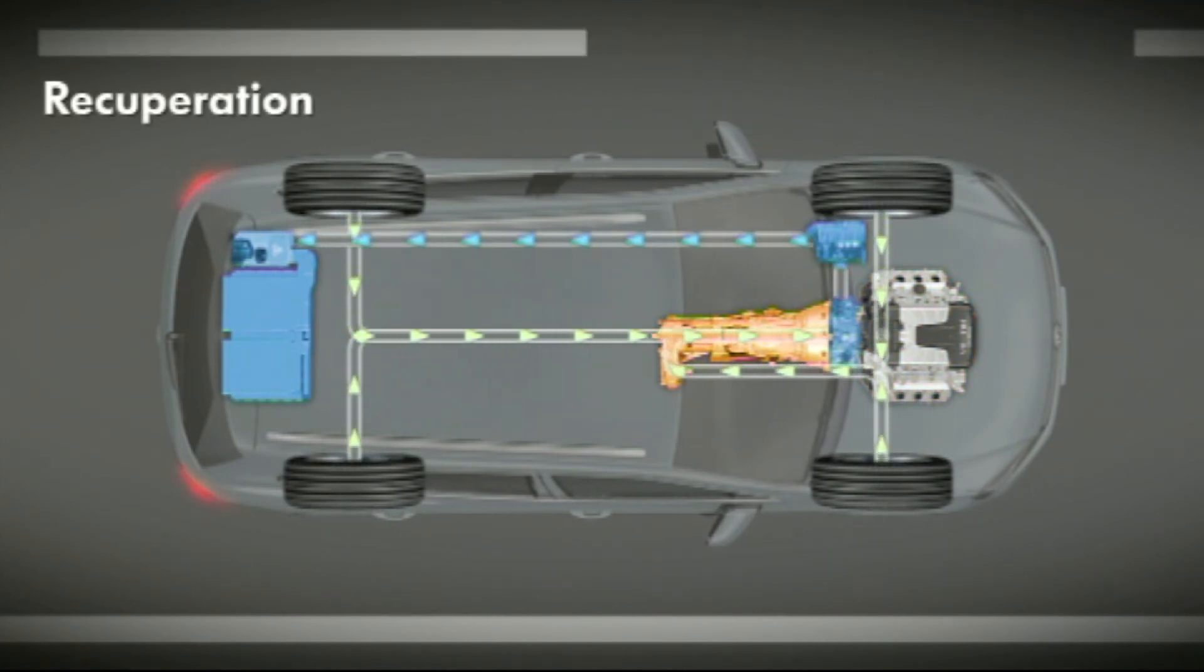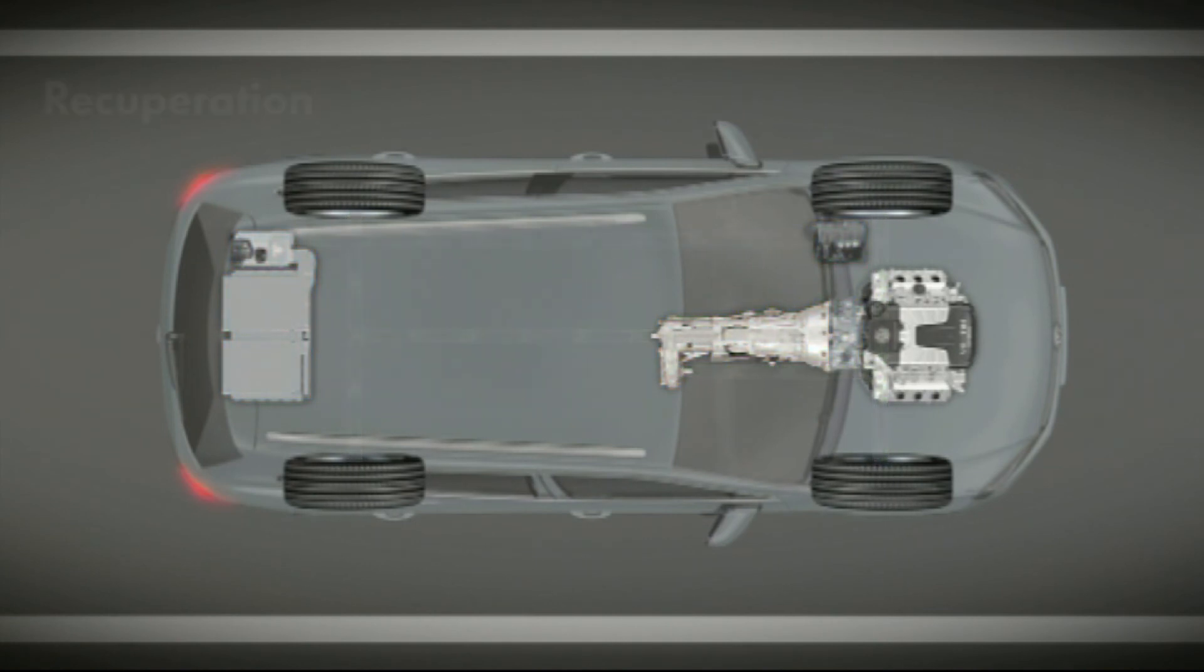When the driver brakes, the new Touareg hybrid makes use of the braking energy. The electric motor then works as a generator and converts kinetic braking energy into electrical energy. This is stored in the high voltage battery and is available to the driver the next time the car starts off.